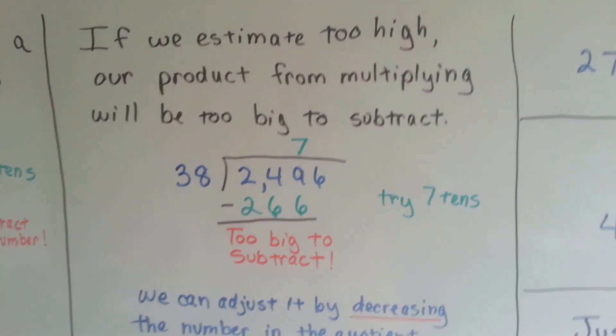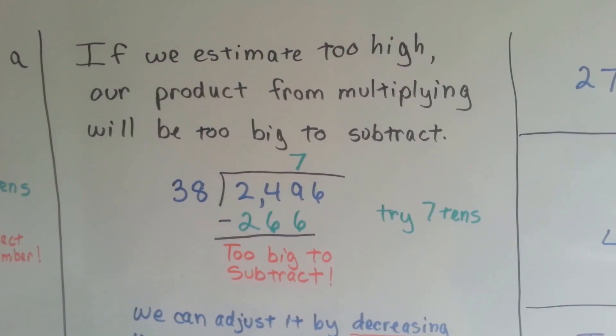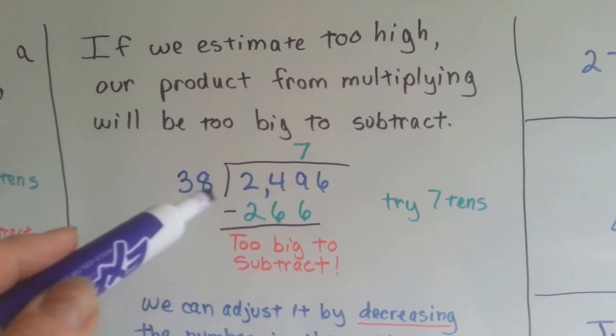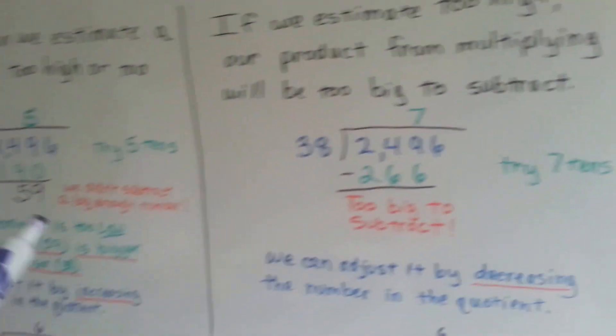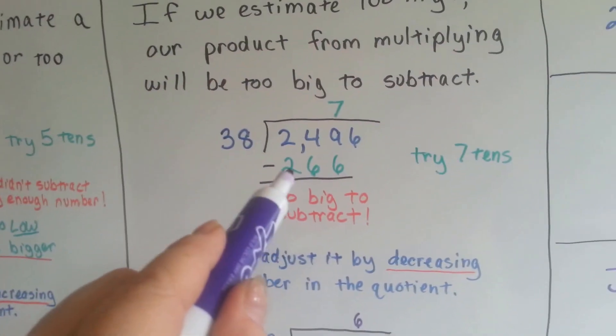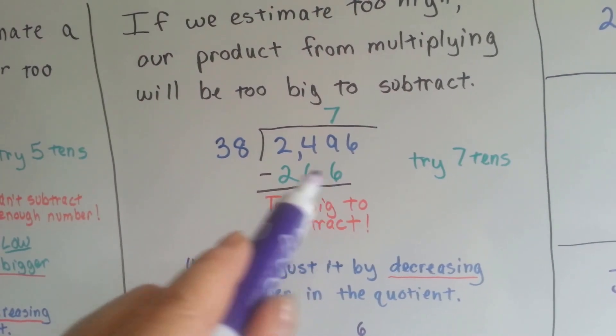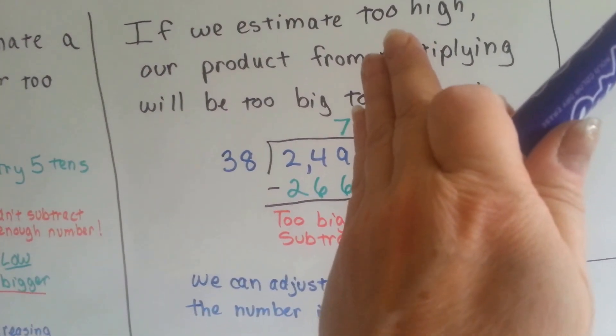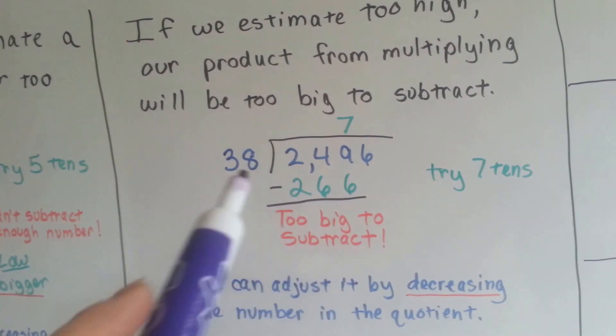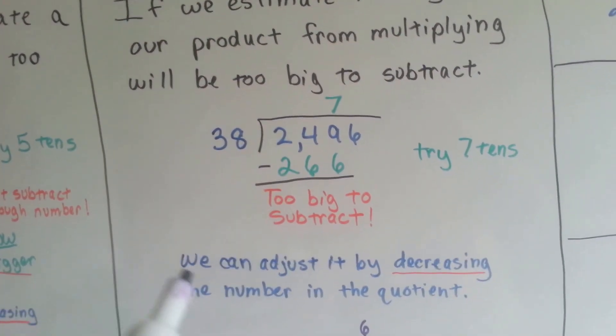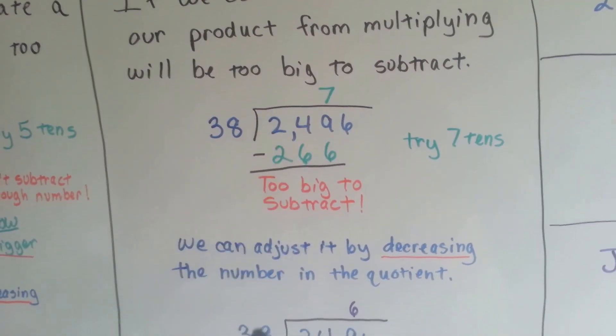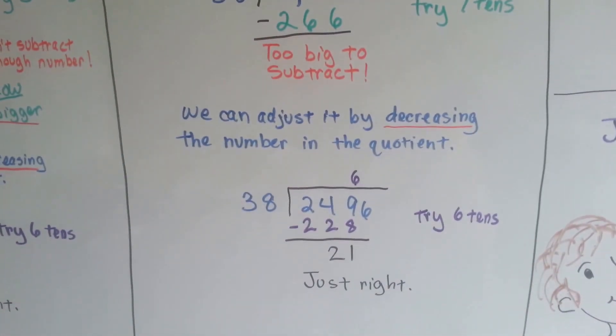If we estimate too high, our product from multiplying will be too big to subtract. If we did 7 here, instead of the 5 or the 6, we'd end up with 266, which is way too big to subtract from the 249. Then we know we went too high. It's way too big to subtract 266 from 249. So we can decrease this by 1 and try it, and it'll be just right.